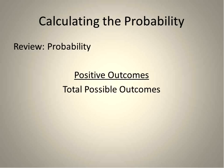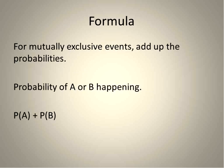Quick review on probability, and then we're going to start calculating the probability of mutually exclusive events. The probability is the positive outcomes or the favorable outcomes or the outcomes you're looking for over the total possible outcomes. We write it as a fraction. Positive outcomes on top, total possible outcomes at the bottom.